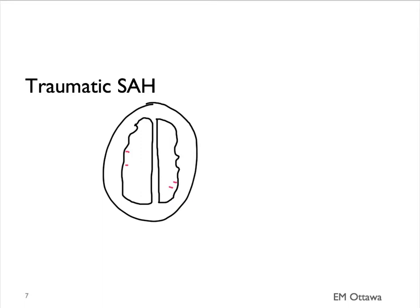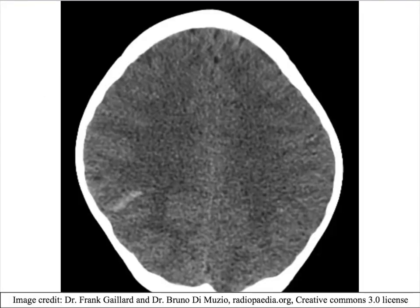A traumatic subarachnoid hemorrhage will be seen in the subarachnoid space. On a CT head, it would look like this. Can you spot the traumatic subarachnoid hemorrhage?